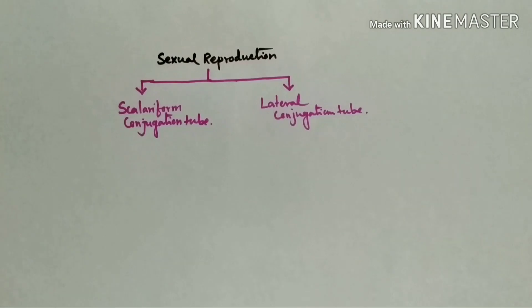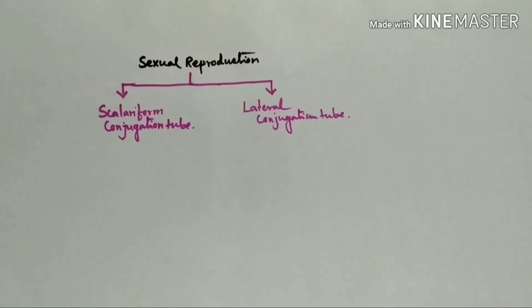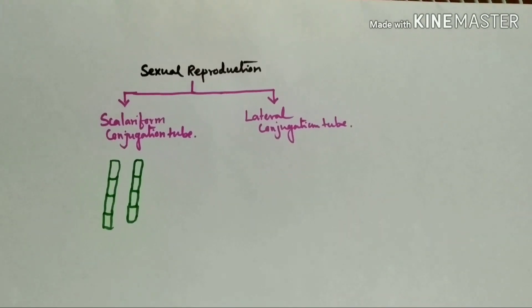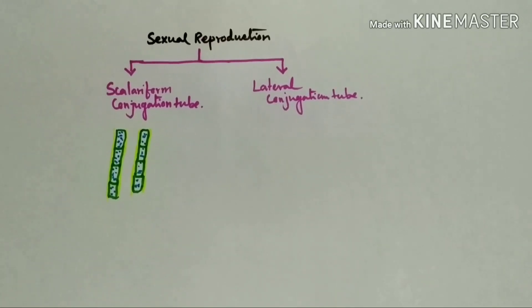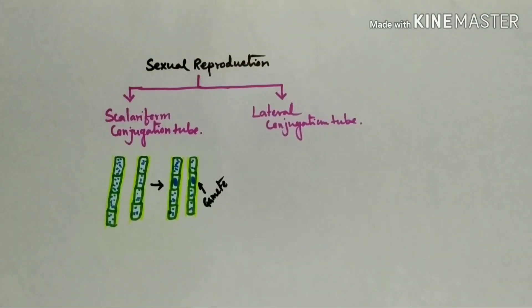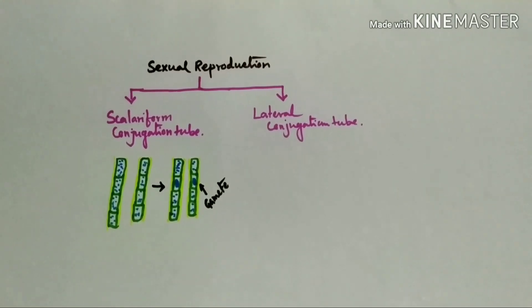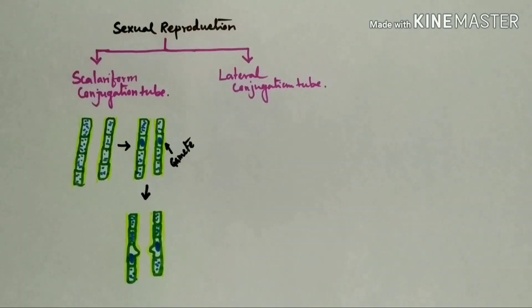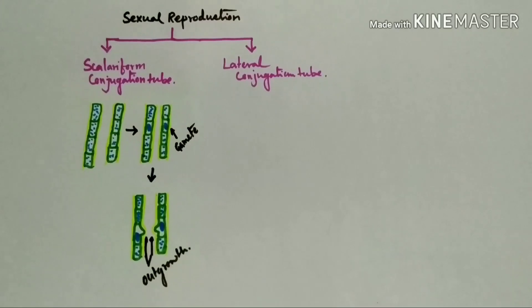In case of scalariform conjugation tube formation, two filaments approach themselves side by side. Protoplasts of any cell convert into gametes, so filament which contains gametes acts as a gametangium.